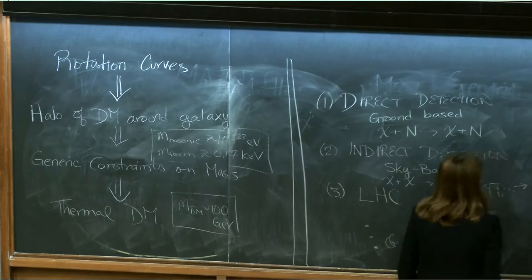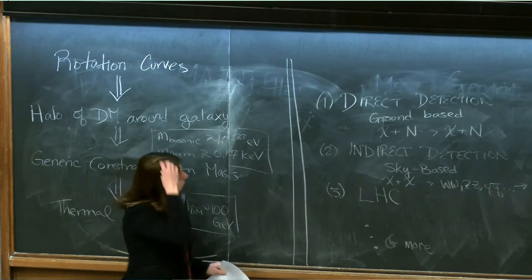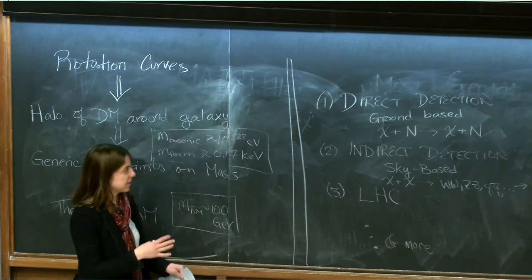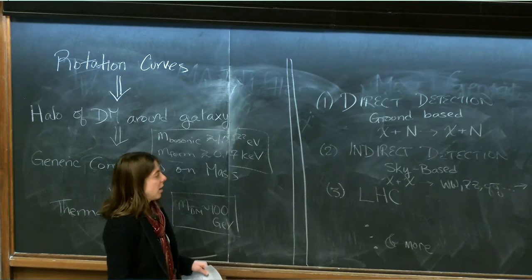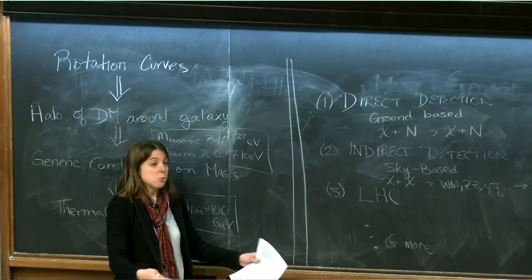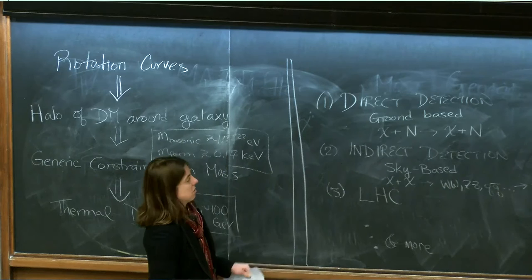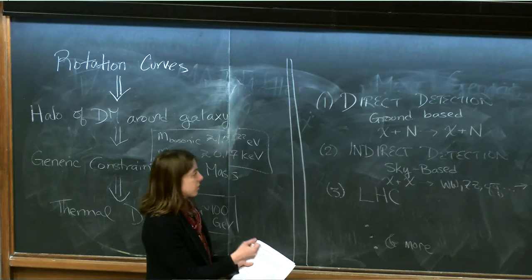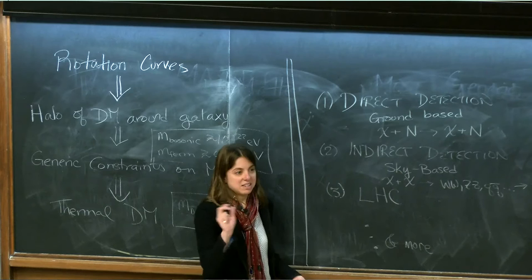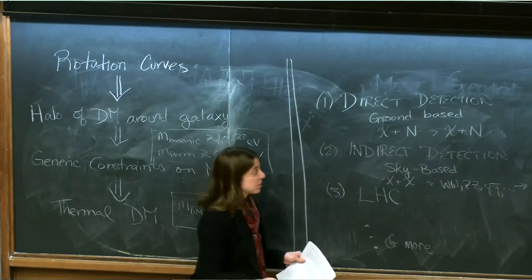For direct detection, what you essentially want to do is get a target of material — like a crystal, or in some cases xenon — and put it deep underground. Most of these labs are at the bottom of mines or at the bases of mountains, mainly because you need to shield your experiment from backgrounds. You put this tub of material there and you wait. Dark matter particles are streaming through us all the time, and you hope one will hit one of the nuclei in your target, causing that nucleus to jiggle a little bit, emitting heat or phonons that you can detect.